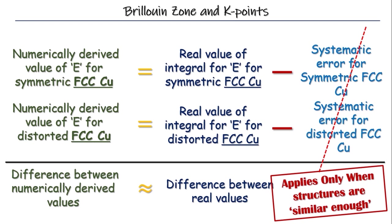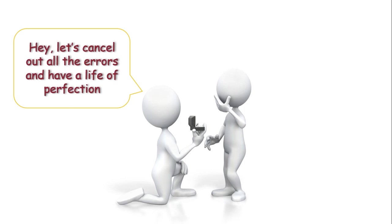One thing should be clear here that this argument applies only when two structures are similar enough to make a similar kind of systematic error. Okay? So, it would be far less reasonable to expect the same argument to apply if we are comparing two significantly different crystal structures for a material.